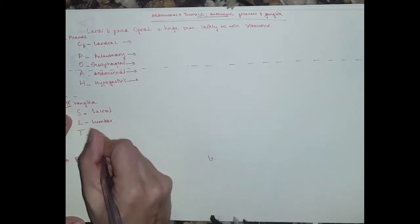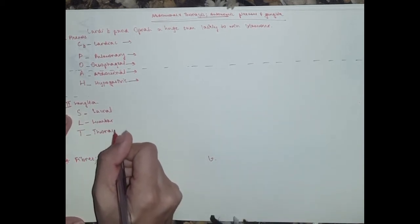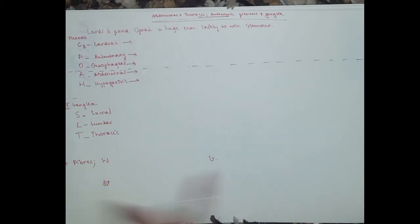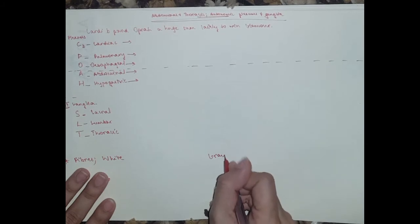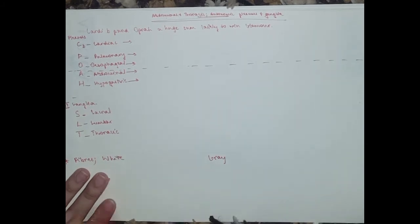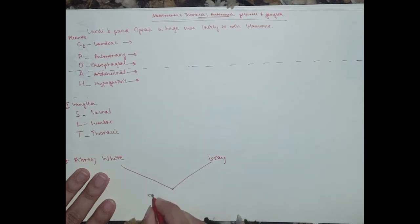But cervical is in our last video because it's about the head and the neck. So we've only included these three here. And the fibers would be white and grey. I'll complete them so white and grey together become ramus communicans.